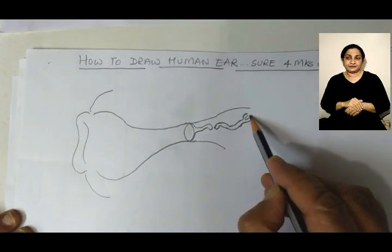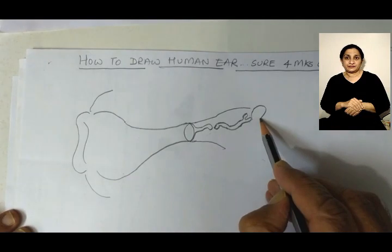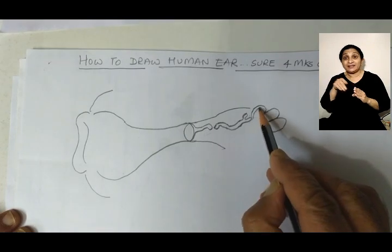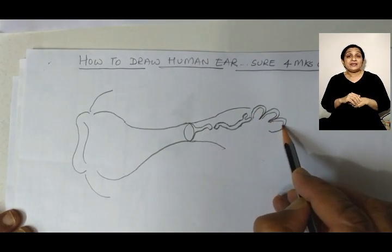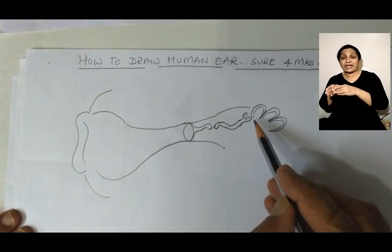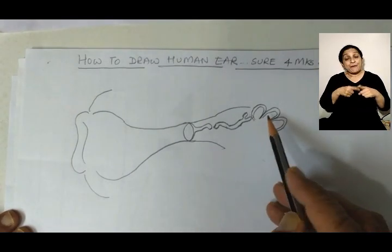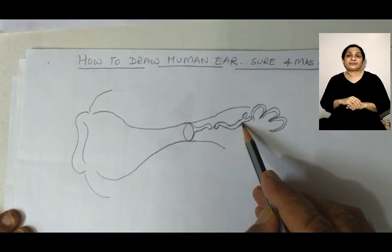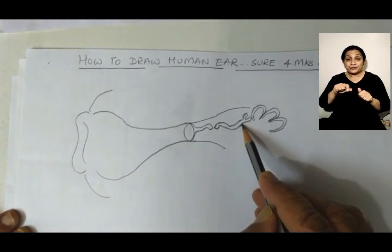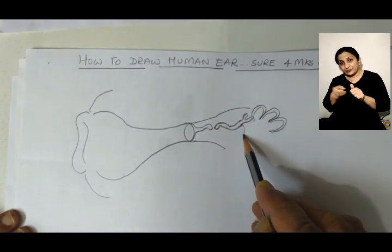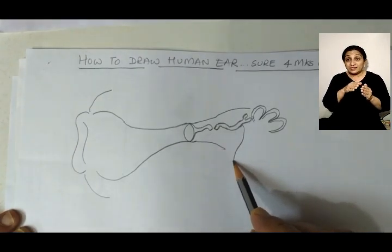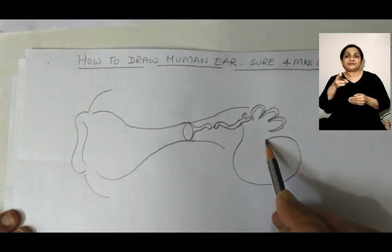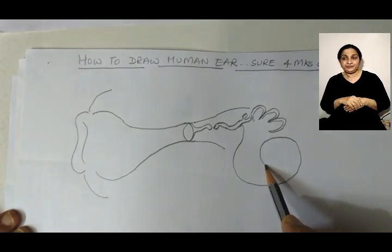The inner ear is called the utriculus, which consists of three semicircular canals — draw two lines like this. From this portion you get the cochlea. Draw a proportionate circular figure like this for the cochlea, and give it a turn like this.